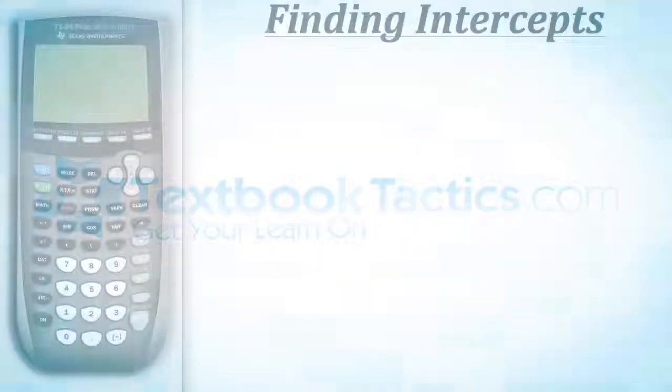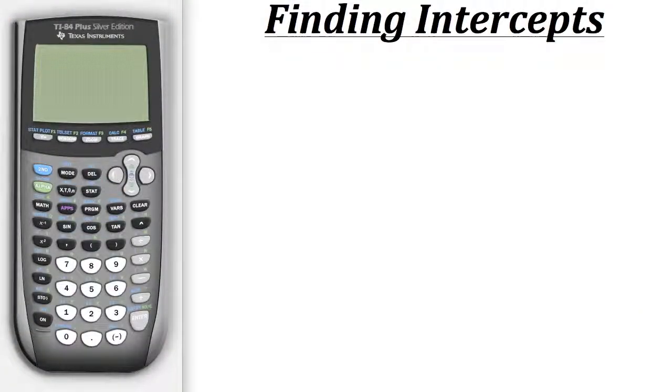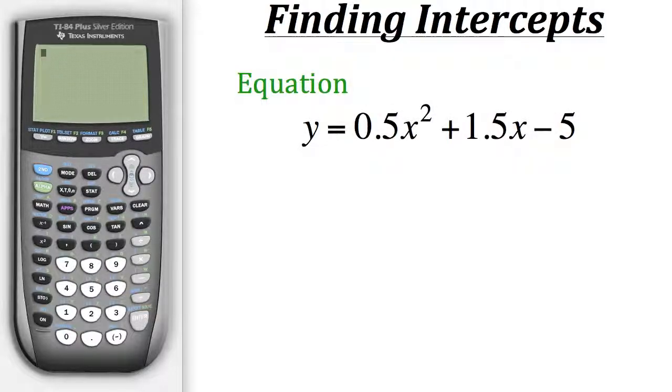This is a tutorial on how to use graph features on a calculator to find intercepts of a function. Now let's use the given equation here as an example. We have y equals 0.5x squared plus 1.5x minus 5.